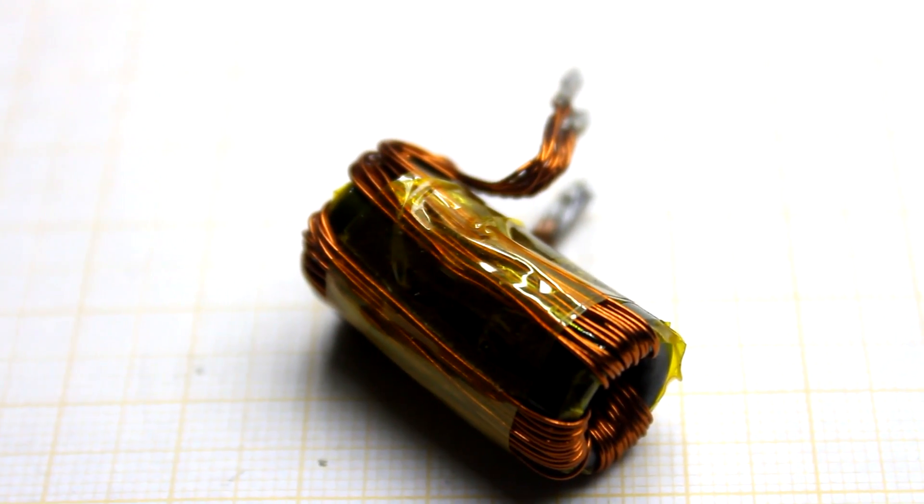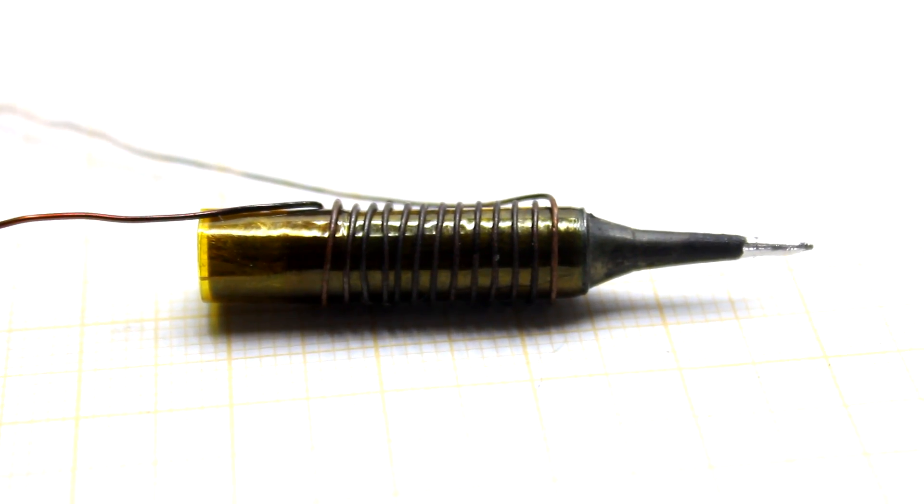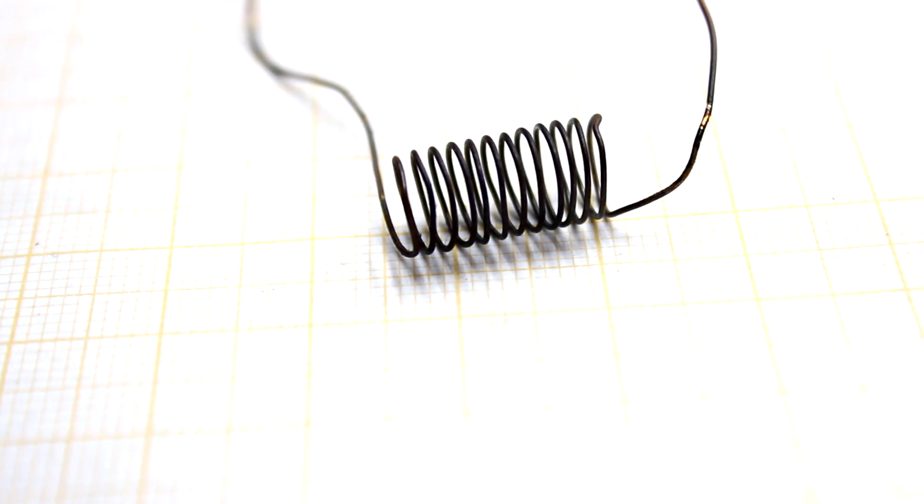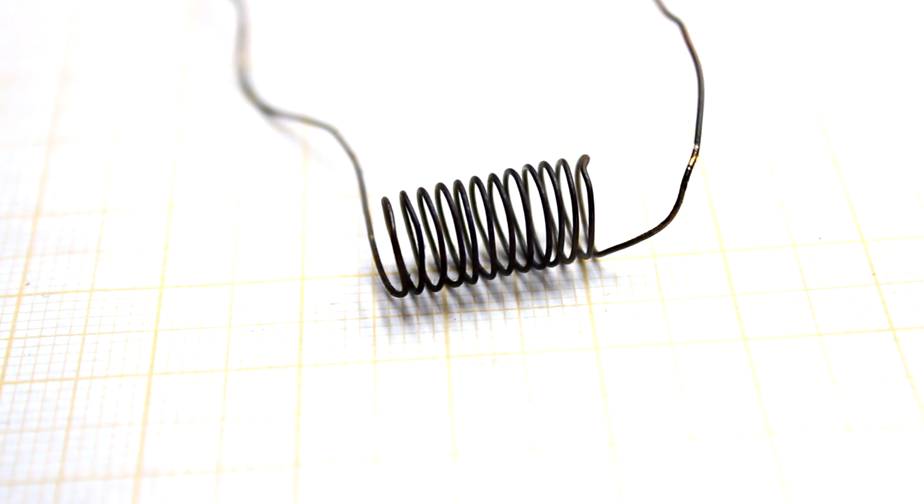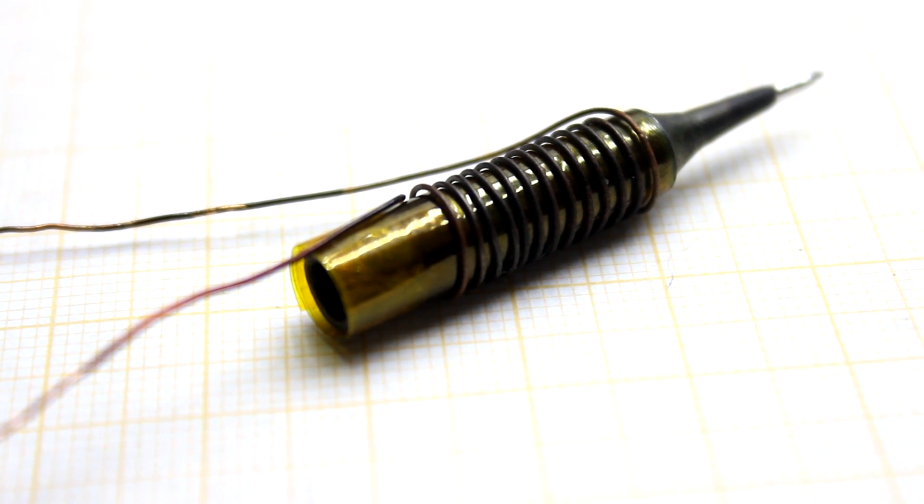Using a separating transformer made it possible to reduce the diameter of the inductor wire. If anyone remembers the first option, the inductor wire was much thicker. Now the diameter is only 0.6 mm.